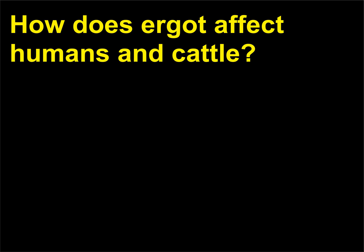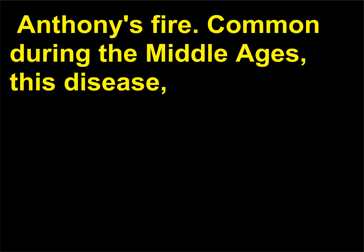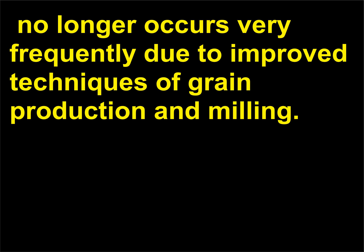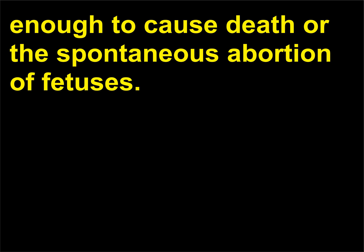How does ergot affect humans and cattle? Eating bread and other grain products contaminated with ergot causes the disease called St. Anthony's Fire. Common during the Middle Ages, this disease causes sensations of intense heat followed by a complete loss of sensation in an infected person's limbs. It no longer occurs very frequently due to improved techniques of grain production and milling. Cattle that graze on grains infected with ergot are able to ingest enough to cause death or the spontaneous abortion of fetuses.